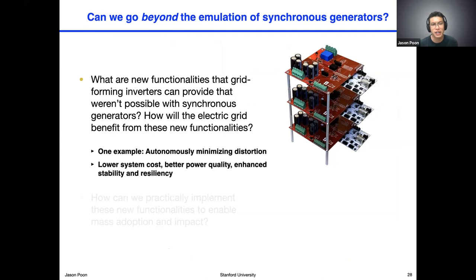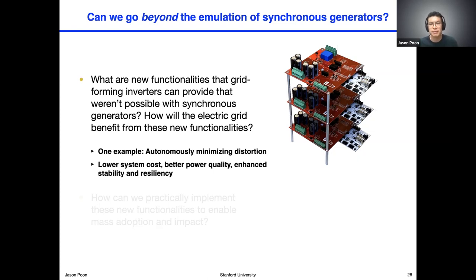To wrap up this first part of the talk, what we showed was simply one example of a functionality that grid-forming inverters could possibly provide — that functionality was this autonomous minimization of distortion. In terms of how the electric grid will benefit: firstly, there's lower system cost in that there's no longer a need for active power filters, and this can be done essentially for free by the inverters. Secondly, it improves power quality, with important consequences for the efficiency of the system. And finally, we showed it can enhance the stability and resiliency of the network by mitigating these instabilities that emerged from high harmonic content systems.